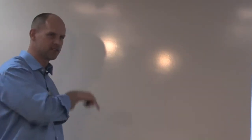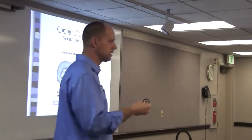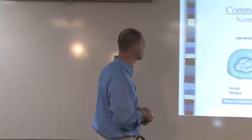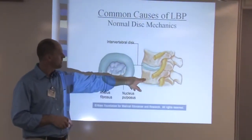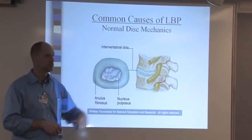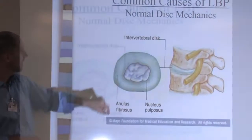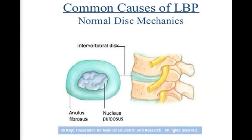Now we're going to move away from basic structure and function and start talking about common injuries that lead to back pain. Our focus is going to be on injuries that stem from the disc. Remember, the disc sits between one vertebra and another. Two main structures make up the disc: we have the annulus — very strong rings of cartilage-type material, almost like rings of a tree — and in the middle we have a soft center, kind of like a jelly donut.